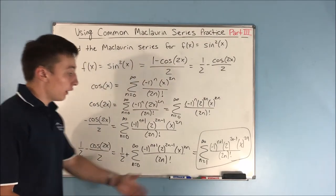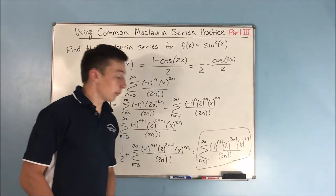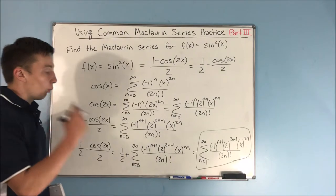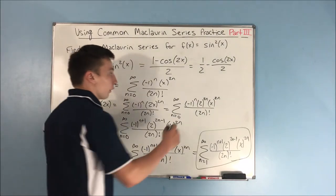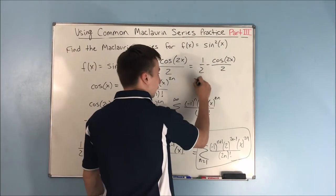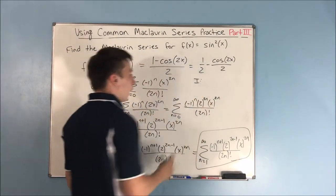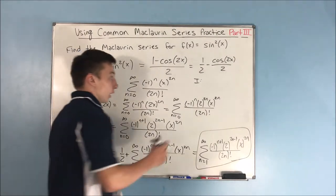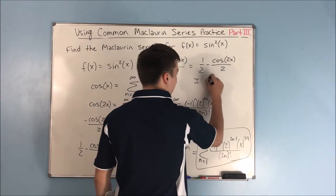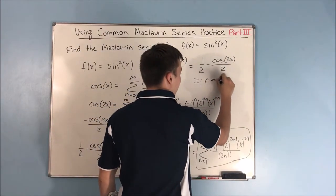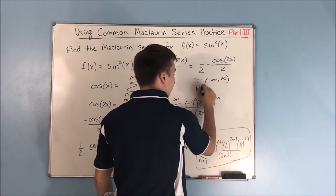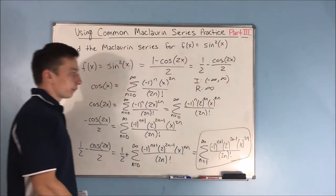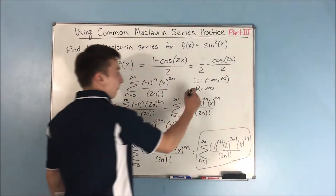The final Maclaurin series is the sum from n equals 1 to infinity of negative 1 to the n plus 1 times 2 to the 2n minus 1 times x to the 2n over 2n factorial. Since we started with cosine of x, the interval of convergence is negative infinity to infinity and the radius of convergence is infinite.